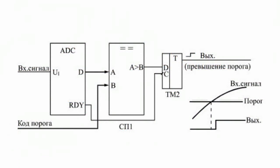The first circuit is designed to fix the moment when the input analog signal exceeds a given threshold voltage. The circuit provides an output signal positive edge when the input analog signal is greater than the set level, and this level is specified by the digital code of the threshold.